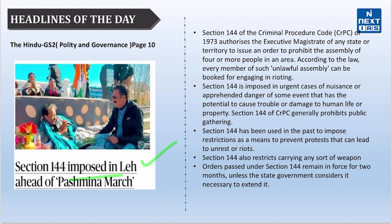Our next headline is related to Section 144 of the CrPC, which was recently imposed in Leh ahead of a Pashmina March by climate activists to highlight shrinking grazing lands of the Union Territory. Section 144 of the Criminal Procedure Code of 1973 authorizes the executive magistrate of any state or territory to prohibit the assembly of four or more people in an area. It has been used in the past to impose restrictions to prevent protests that can lead to unrest or riots. It also restricts carrying any sort of weapon. An order passed under Section 144 remains in force for two months unless the government considers it necessary to extend.